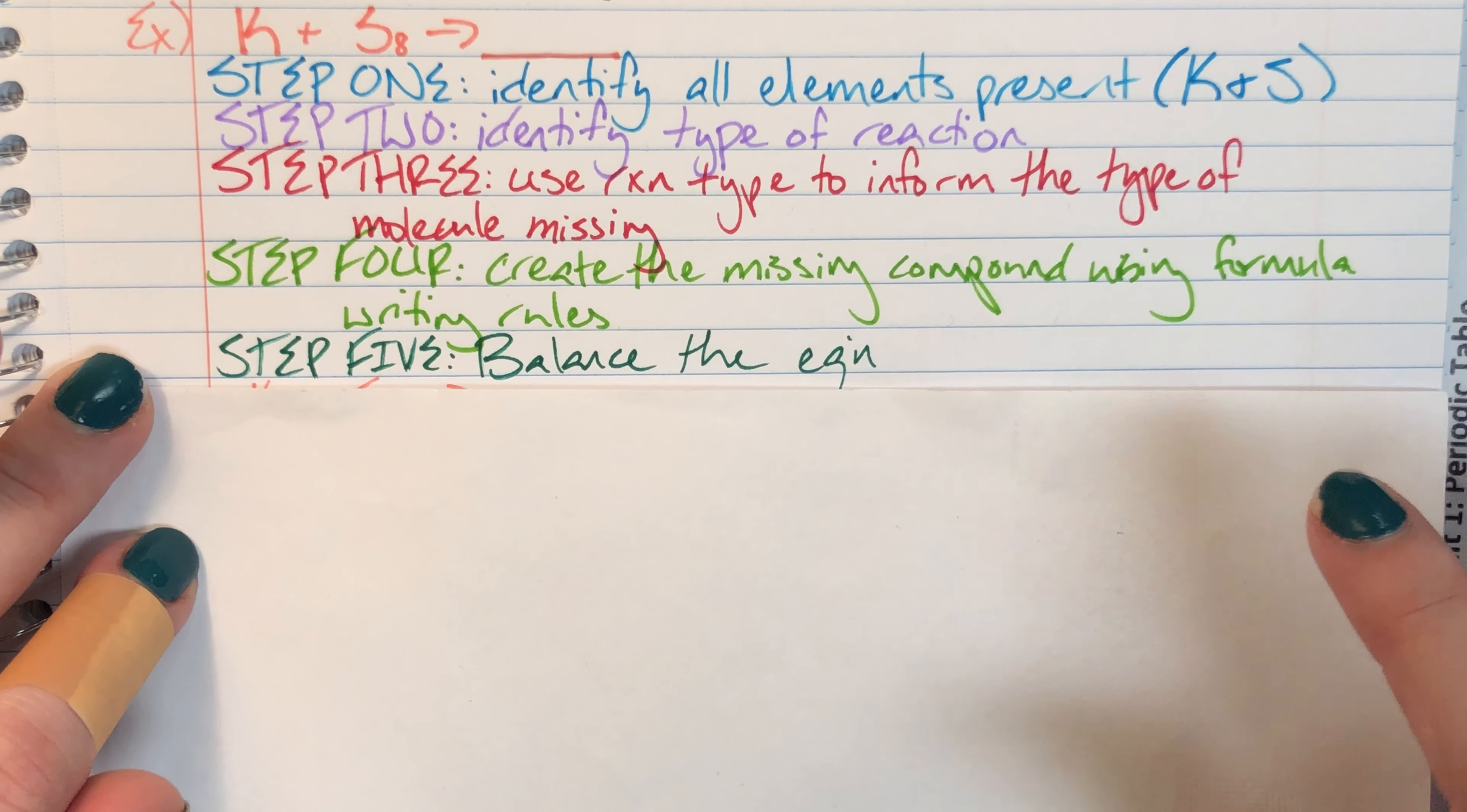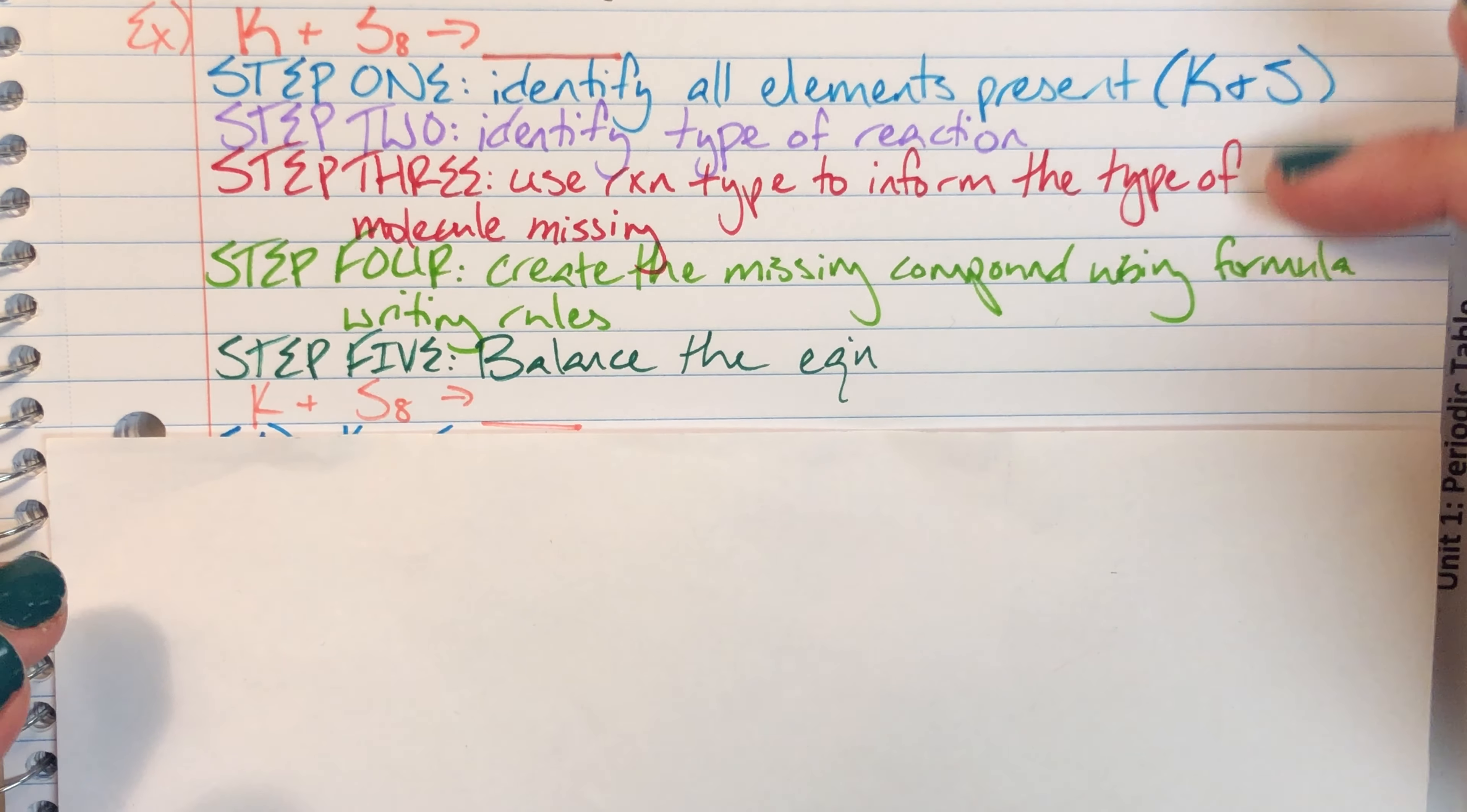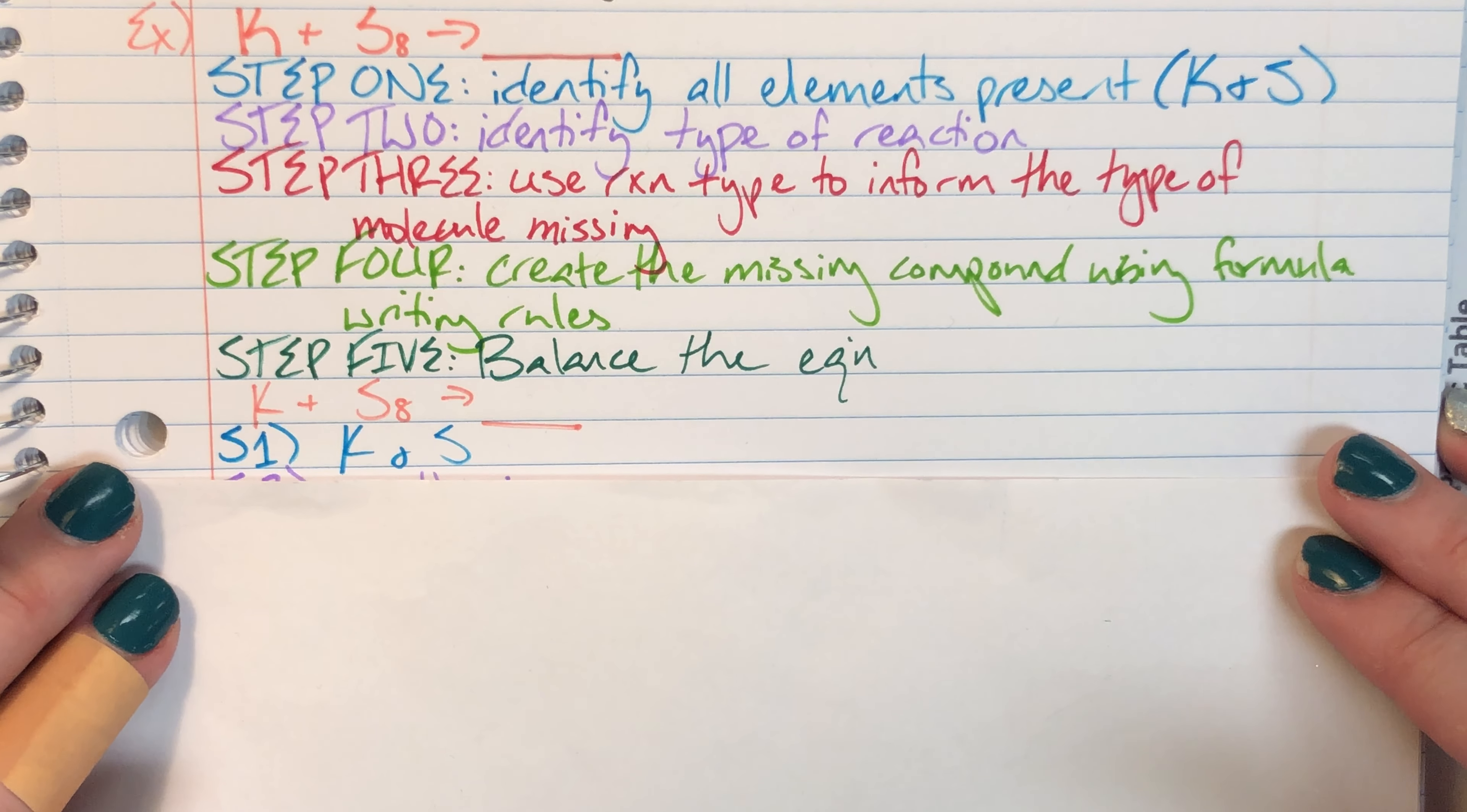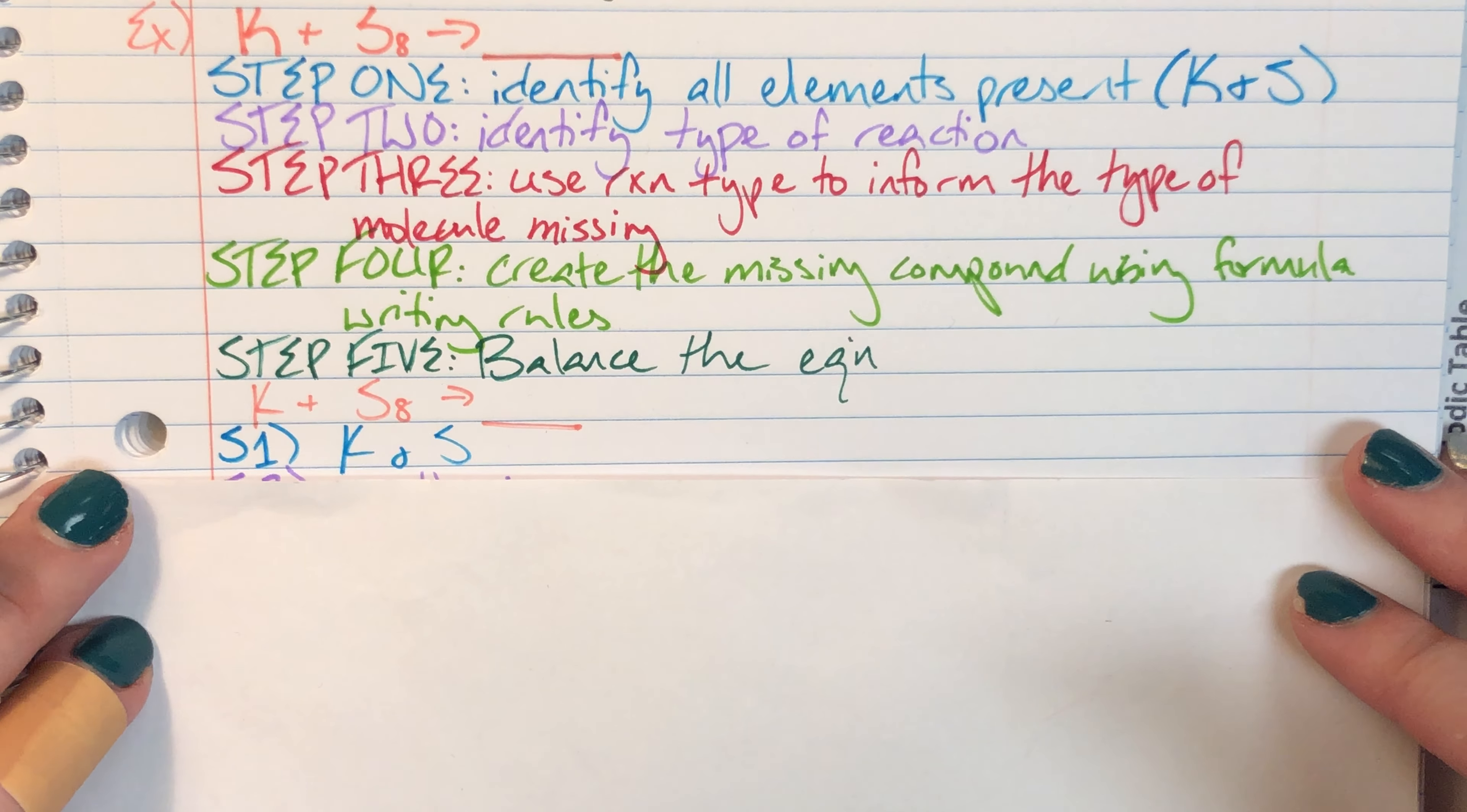So let's go ahead and actually get this started for this equation. I'm gonna just rewrite it so that I have some room to work here. And I'm gonna go ahead and start with step one. Step one was to identify all of the elements present, so I have potassium and sulfur present.